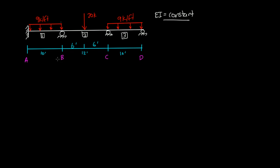And the very first step in analyzing a structure using the stiffness method is to determine the degrees of freedom. So I'm going to redraw the structure here without any of the loading. So we have a fixed support, a roller, a roller, and then a third roller.